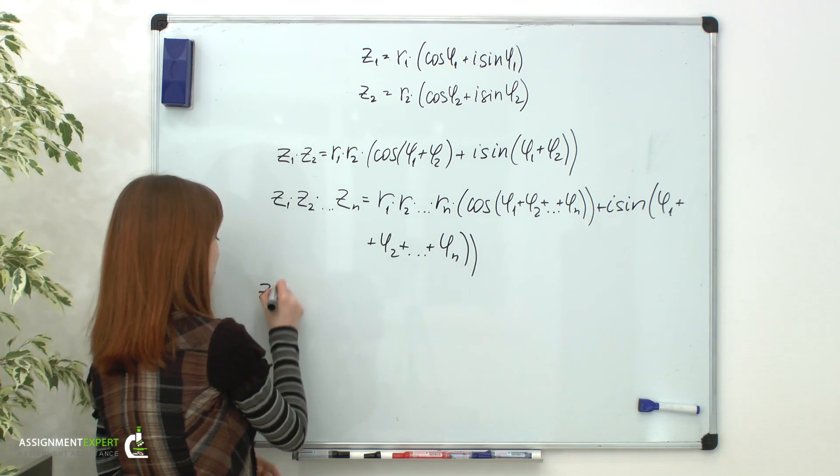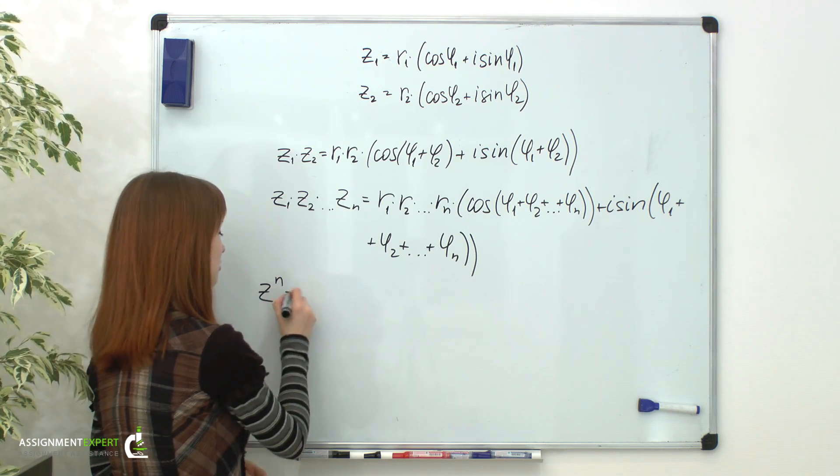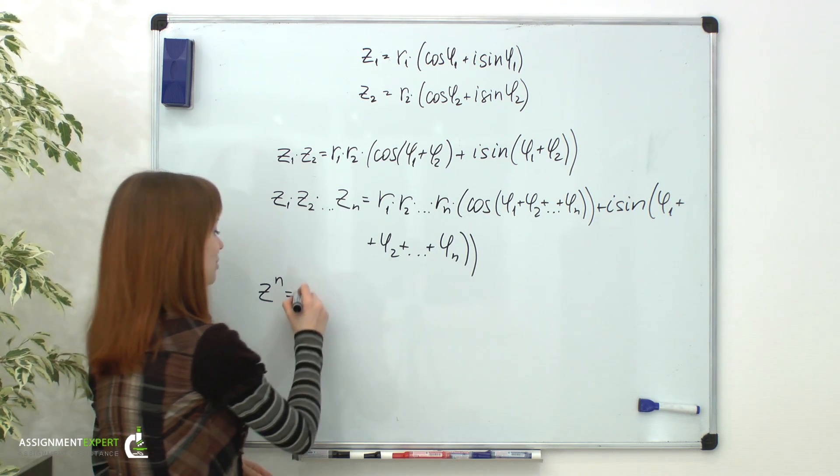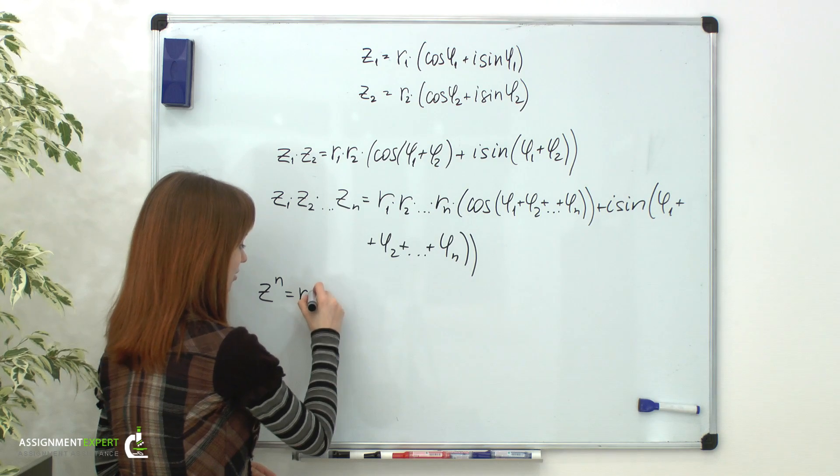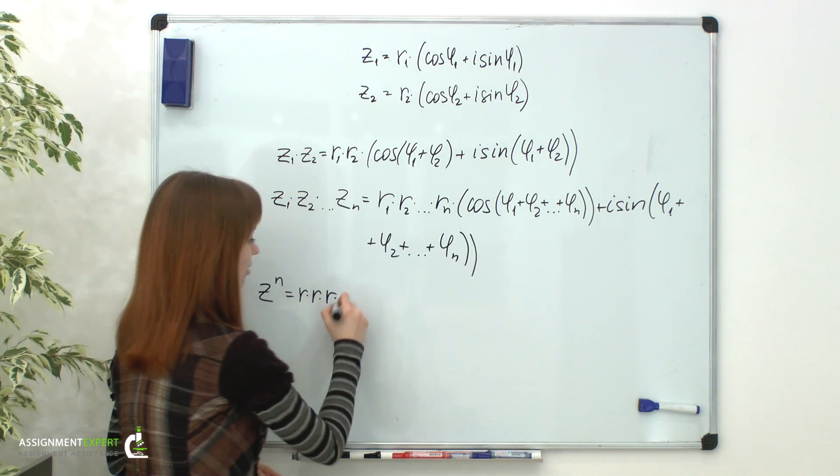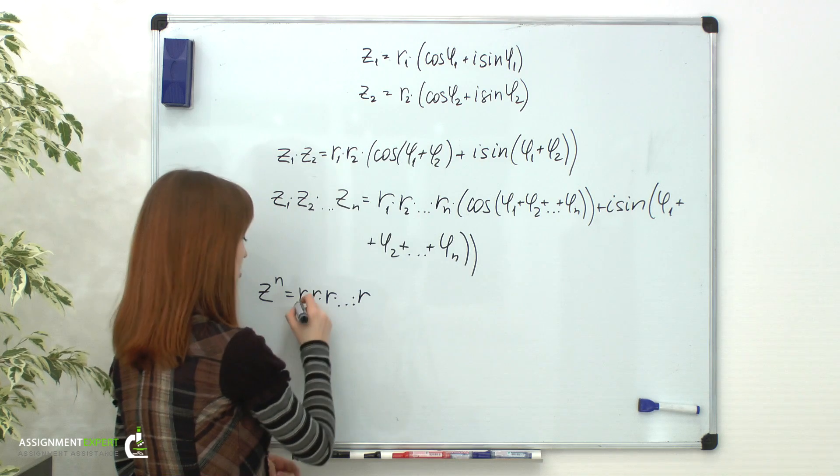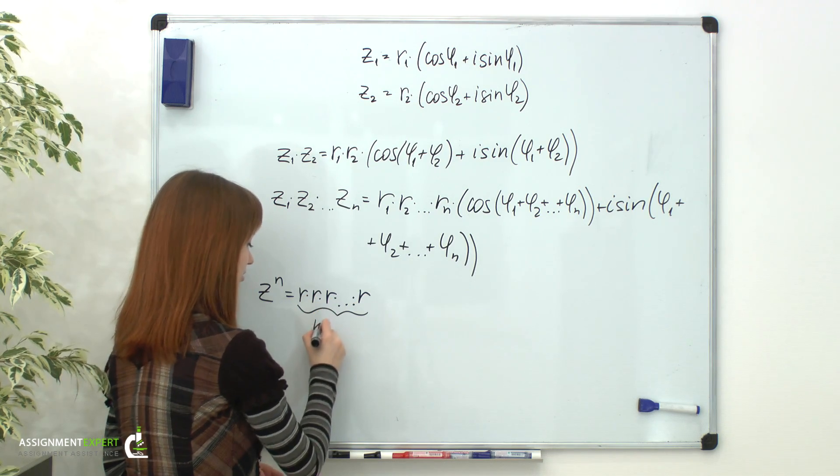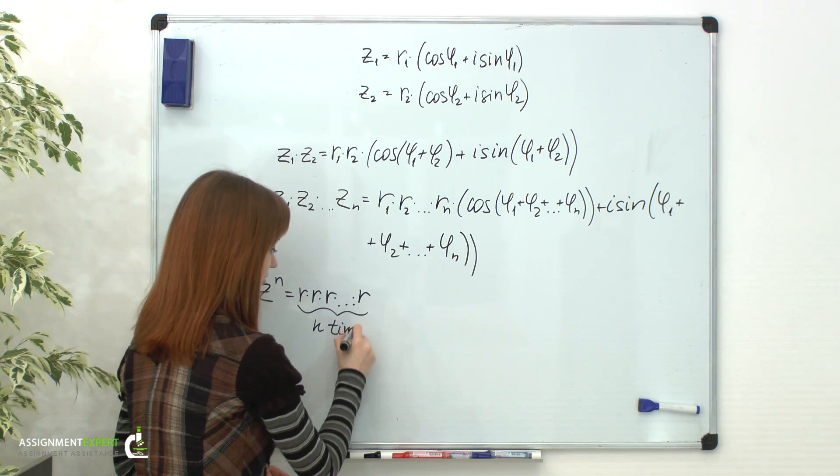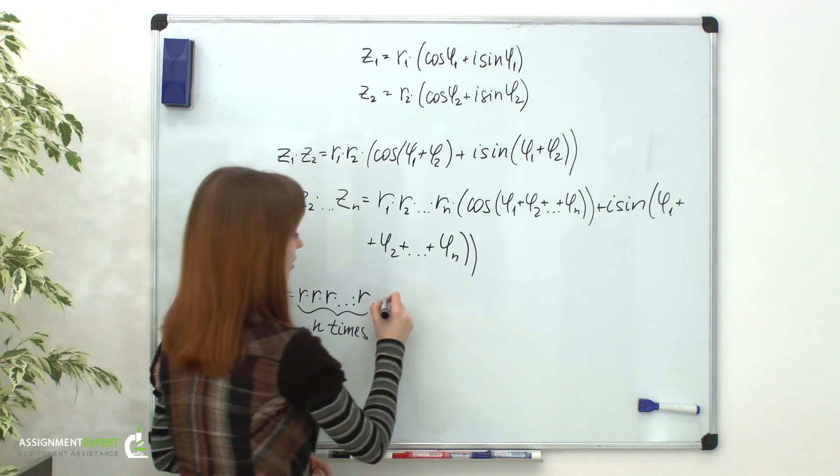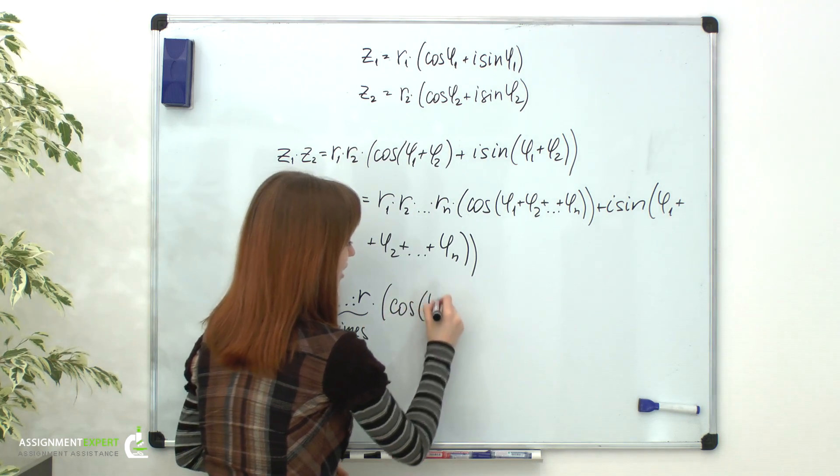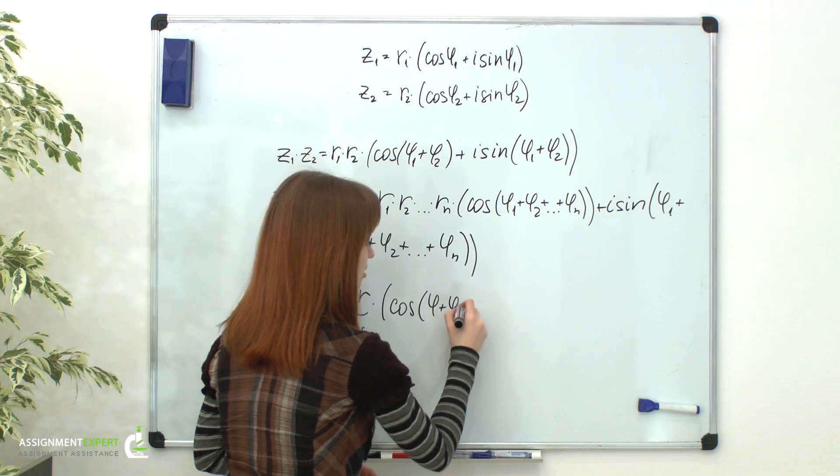So, to find z raised to n forward, we need to multiply its module for n times and add its arguments for n times.